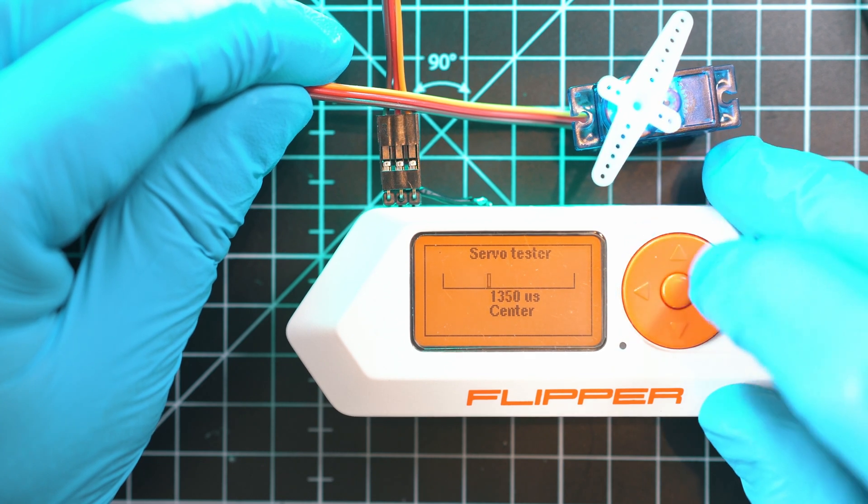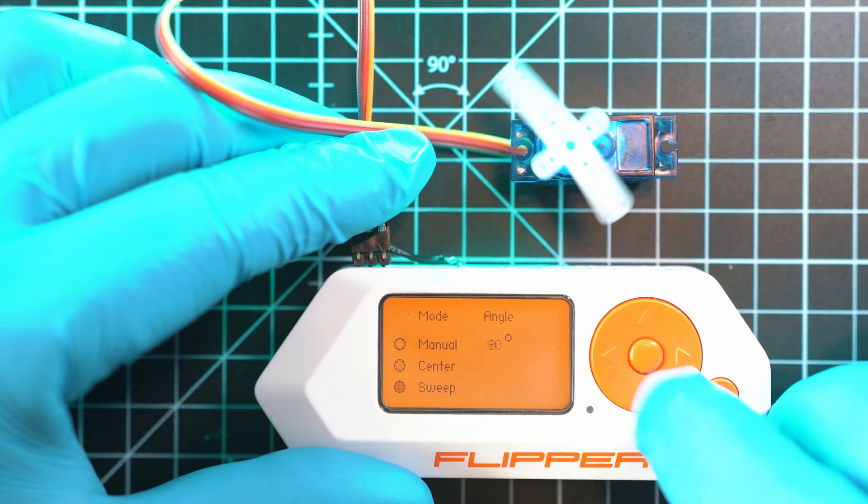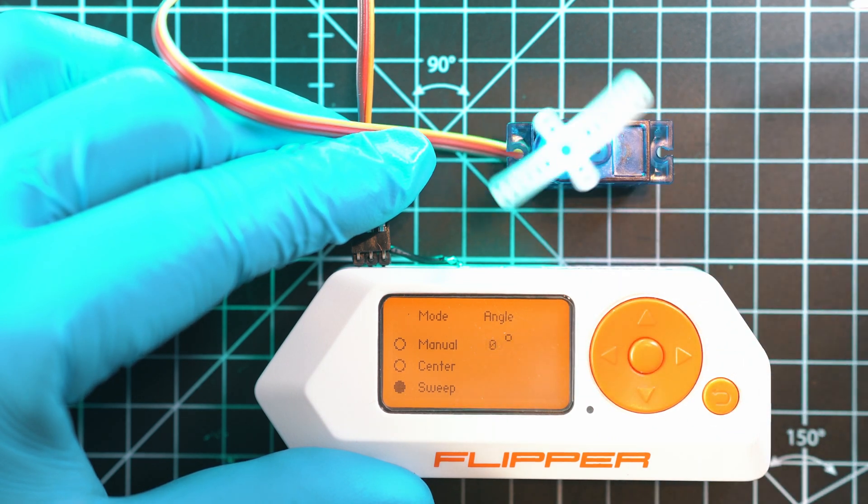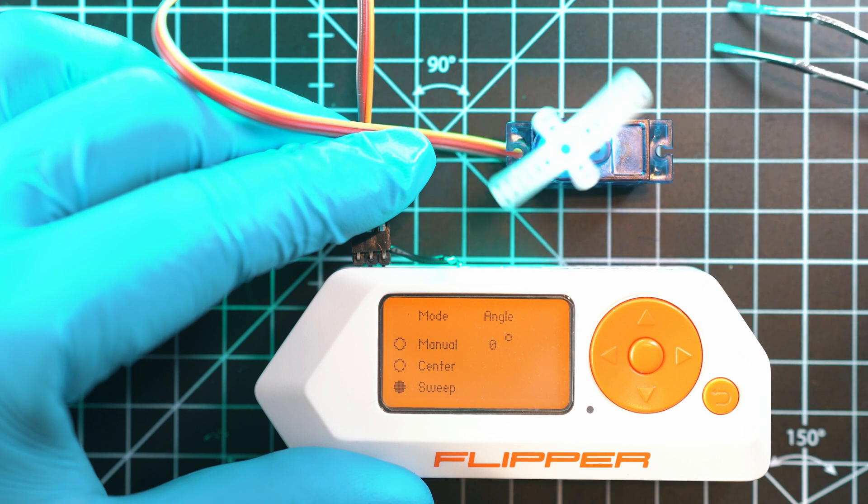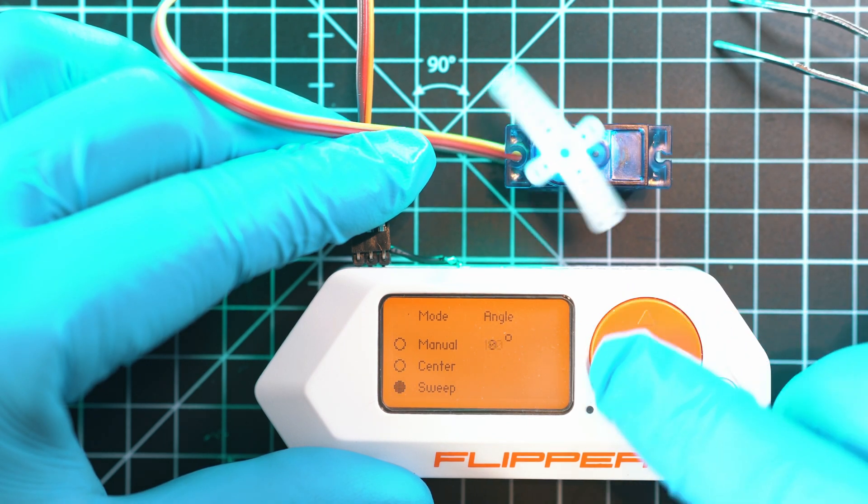Now let's see servo tester too. Boom. Normal, center and sweep test movements from end to end. There is also actual angle of the servo. Now, I can test my RC servos.